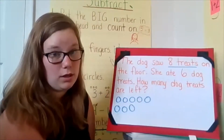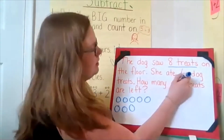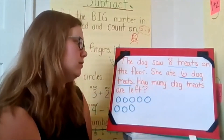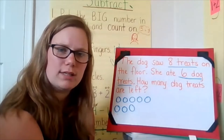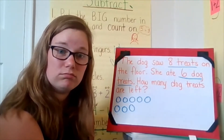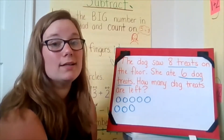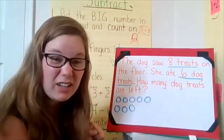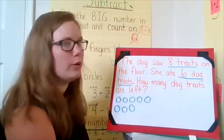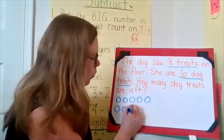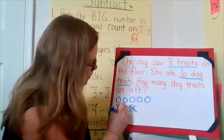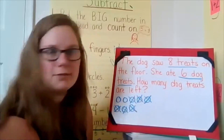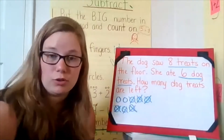So there were eight dog treats on the floor. The dog ate six dog treats. So if the dog ate six dog treats, how many circles are we going to cross out or take away? Six, because when the dog ate six dog treats, they got eaten or taken away. We're going to cross out six. Ready? One, two, three, four, five, six.